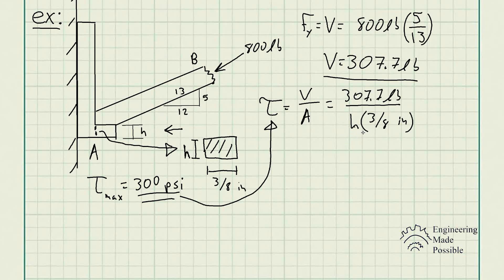All we have to do is some algebraic manipulation such that we solve for h. In this case, we bring h to this other side and divide by the shear stress on both sides such that we solve for h. So h equals the shear force divided by the maximum allowable times 3/8 inch.